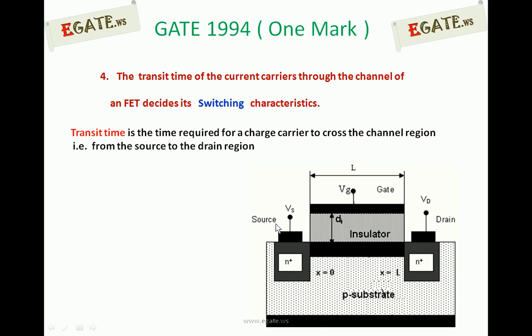The name 'source' is given because it sources the majority charge carriers for the MOSFET. A MOSFET is a unipolar device whose current conduction depends only on one type of charge carrier — always majority carriers — and the source always supplies those majority carriers. Since it is N-channel, it sources electrons, so electrons move from source to drain.